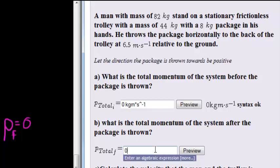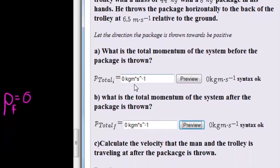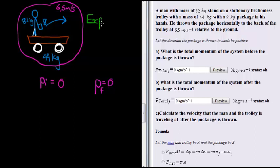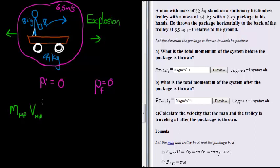What is the total momentum of the system after the package is thrown? Same thing — zero kilogram meters per second. The next question asks us to calculate the velocity that the man and the trolley are traveling at after the package is thrown. We notice that this is actually an explosion — it doesn't fit our normal idea of an explosion, but afterwards we have things going in opposite directions where initially we had one system. The man-package velocity was zero because nothing was traveling.